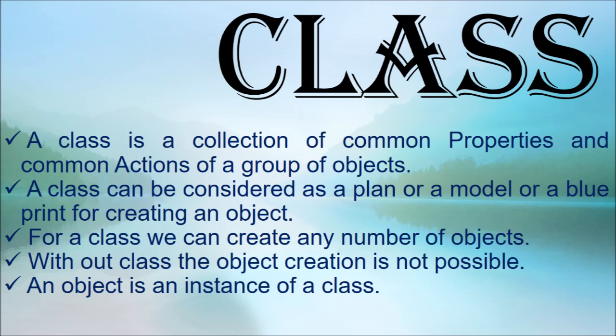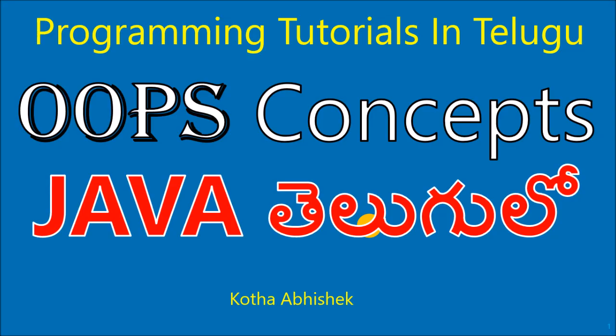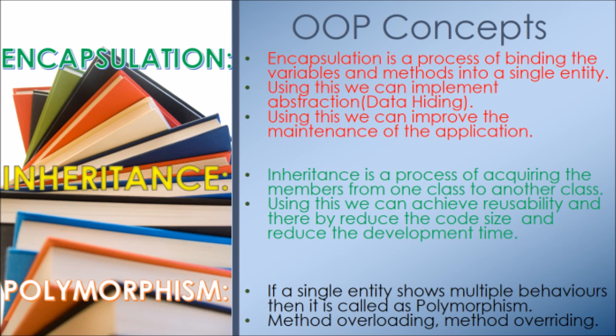Now we will learn the concept of object-oriented programming concepts, which make programming easy to use and develop. The main object-oriented concepts are three types: the first one is encapsulation, the second one is inheritance, and the third one is polymorphism. These three will be discussed in detail.